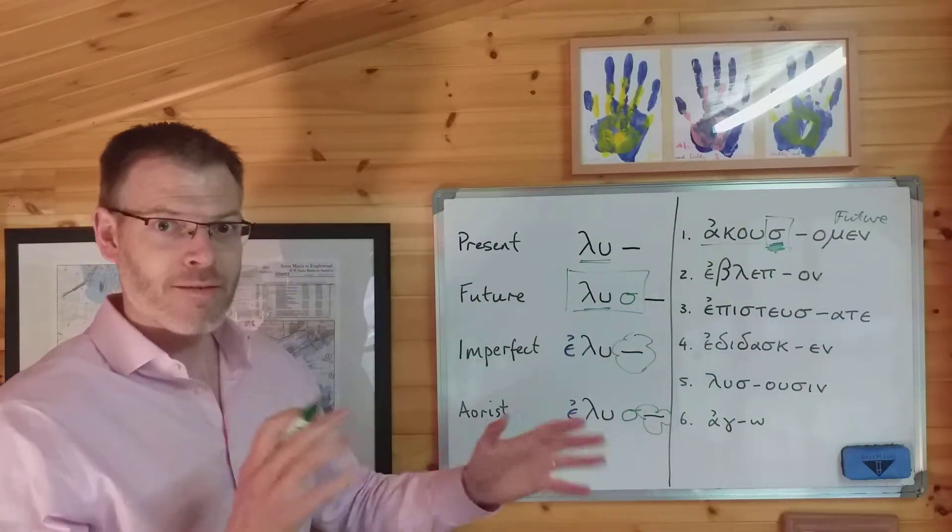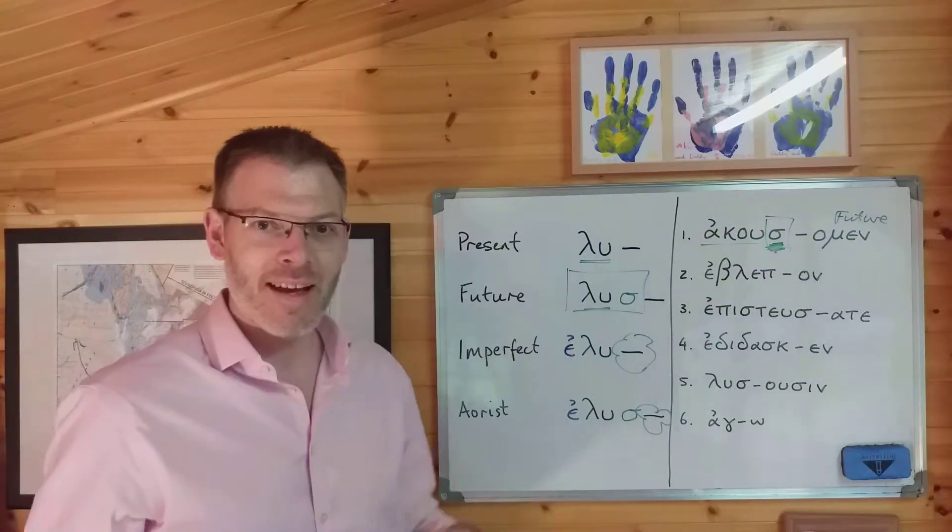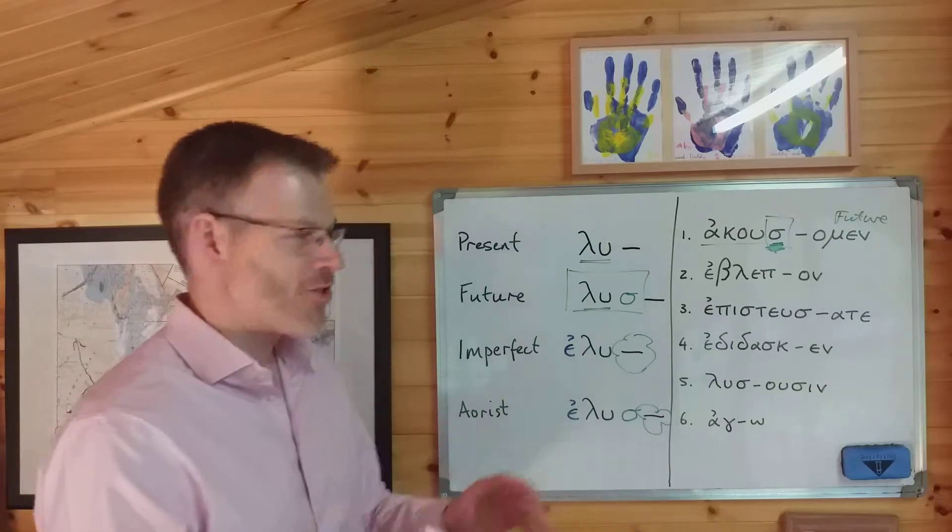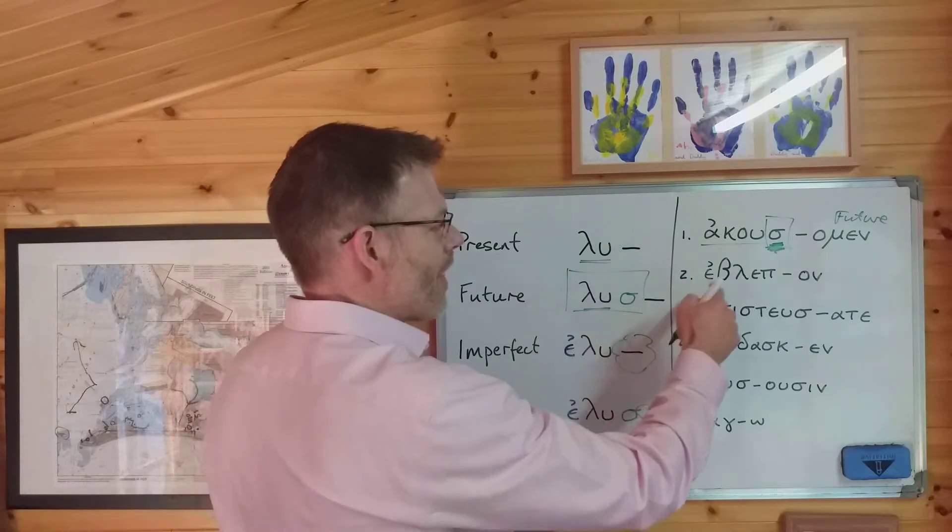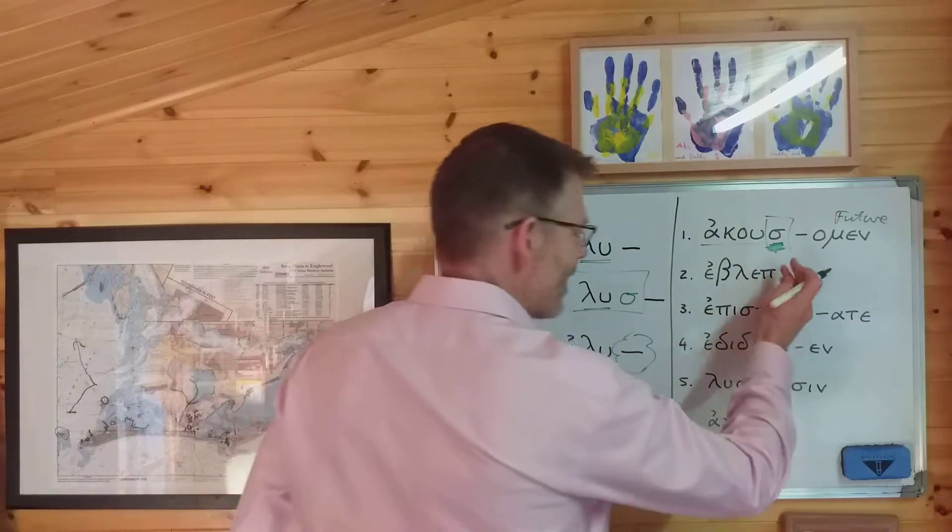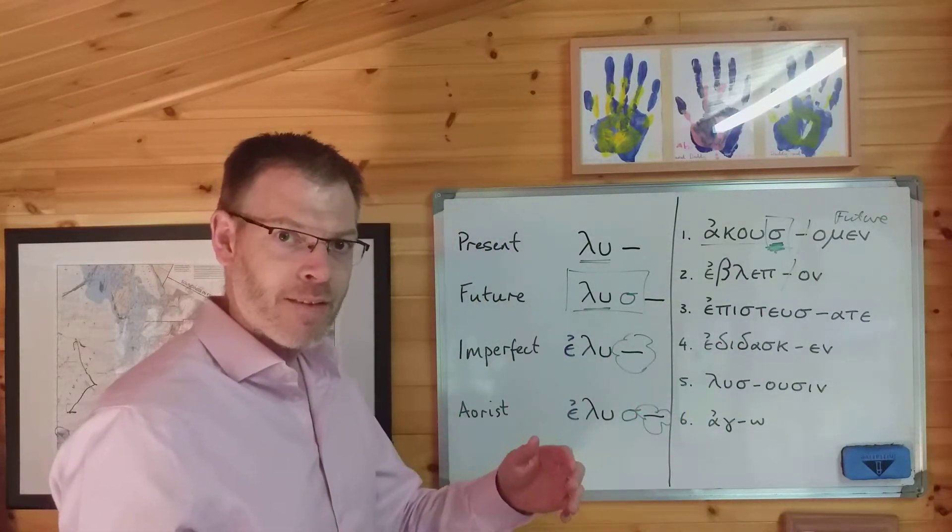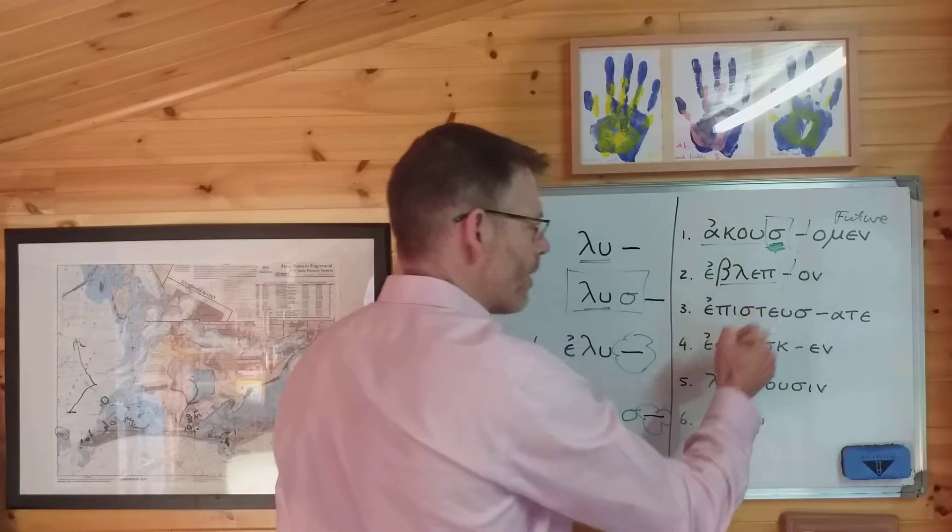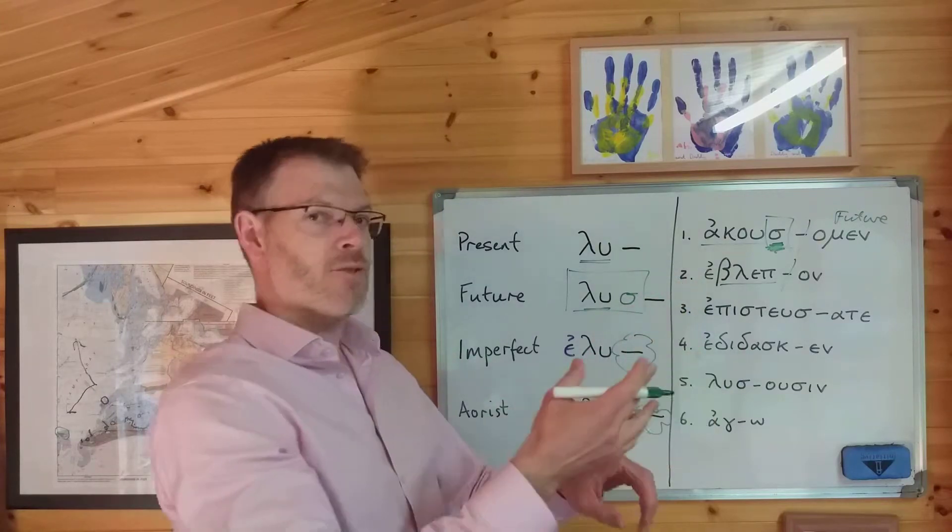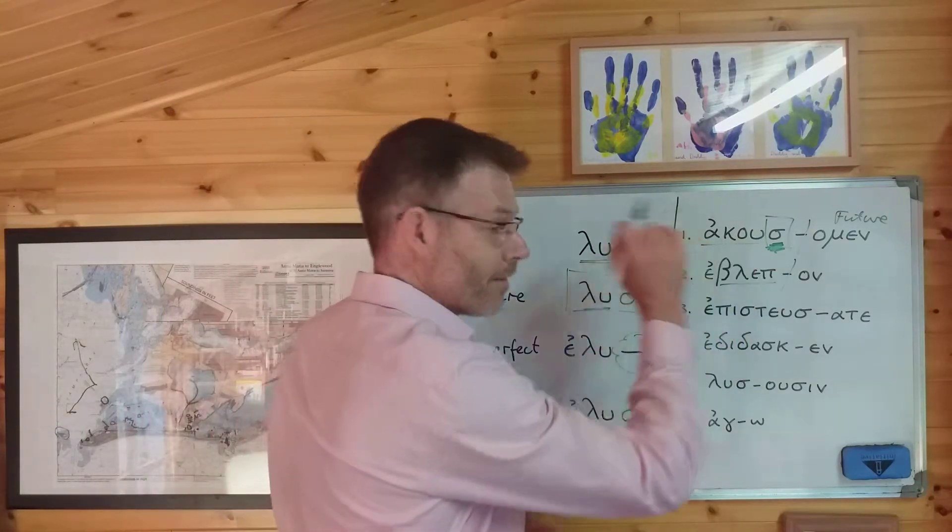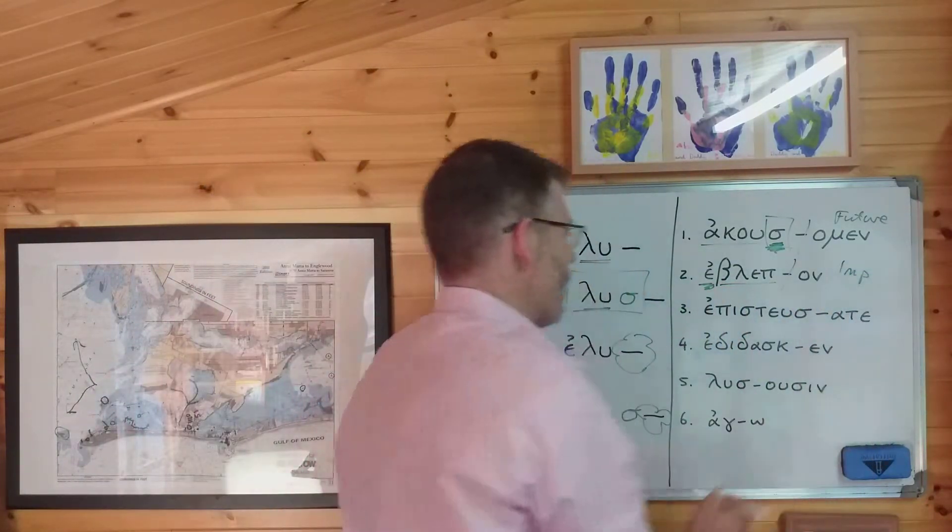Excellent. So you might want to pause the video now. I suggest you do numbers two to six. Pause the video then come back and I'll show you the answers. Ready? You've done the exercises? So number two, εβλεπον. Ignore the ending. Just get rid of that. What verb does it come from? What's the stem? The stem is βλεπ from the verb βλεπω. Does it have an epsilon augment? Yes. So it's either imperfect or aorist. Does it have a sigma suffix? No, it doesn't. It just has an epsilon augment, which means it is imperfect.